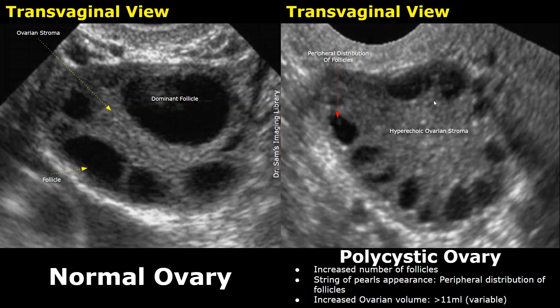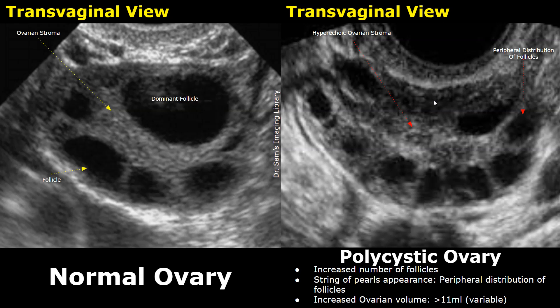This is another image of a polycystic ovary. The central hyperechoic stroma is more prominent in this image, and a string of pearls appearance can be seen.